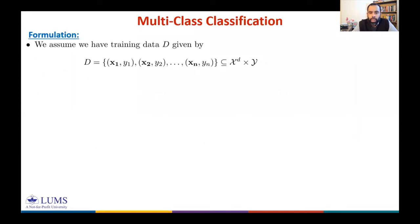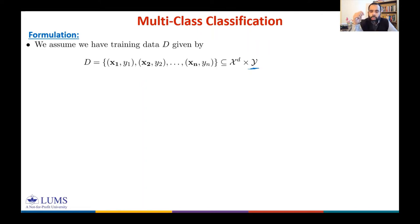We formulate our classification problem in which we have x1, x2, ..., xn as input data points, where each x belongs to the d-dimensional feature space. Each label y1, y2, ..., yn is a scalar representing the class for a classification problem. Each y belongs to a set Y. If Y can only take two values — that is, the cardinality of Y is two — we say we have a binary classification problem, where y can take 0 or 1, or -1 or 1.